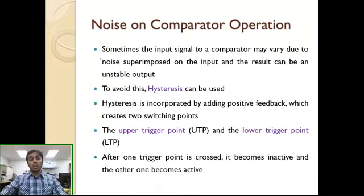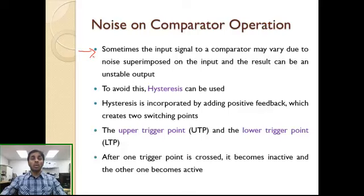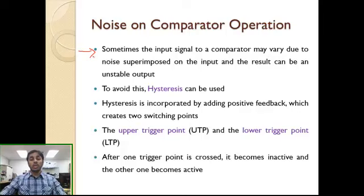Sometimes the input signal to a comparator, due to noise superimposed on it, results in an unstable output — switching from positive VCC to negative VCC and back as quickly as possible. To avoid this, we deploy a mechanism called hysteresis. Instead of defining only one reference signal, hysteresis defines two reference signals called the Upper Trigger Point (UTP) and Lower Trigger Point (LTP), also referred to as upper and lower threshold points.